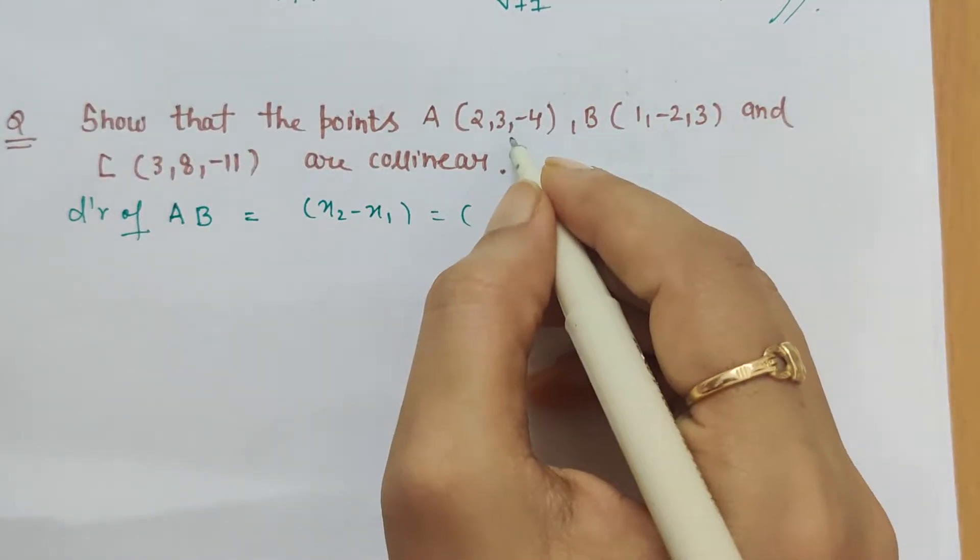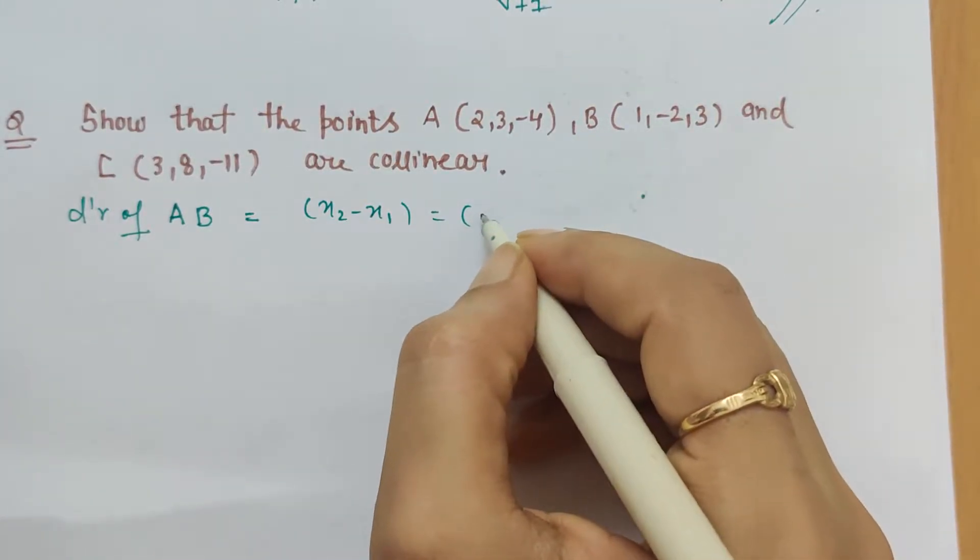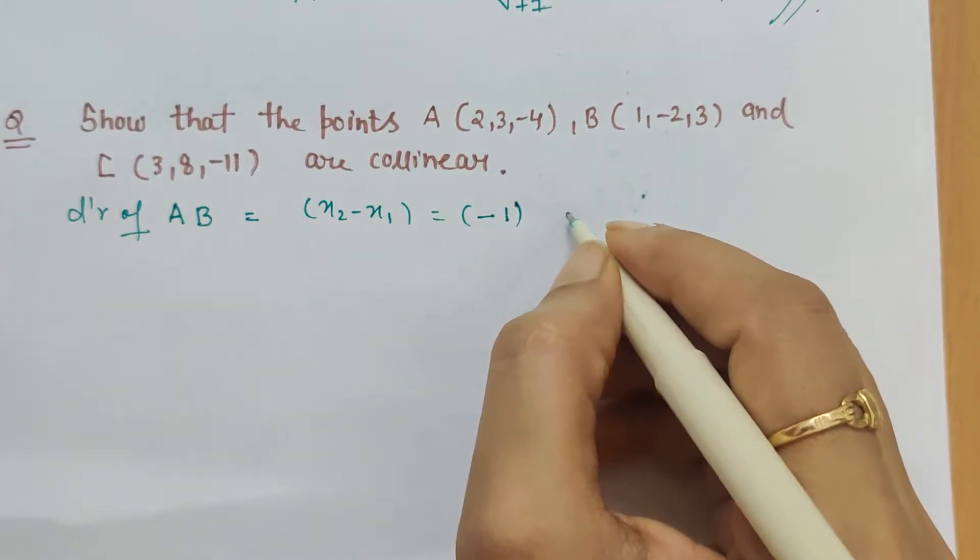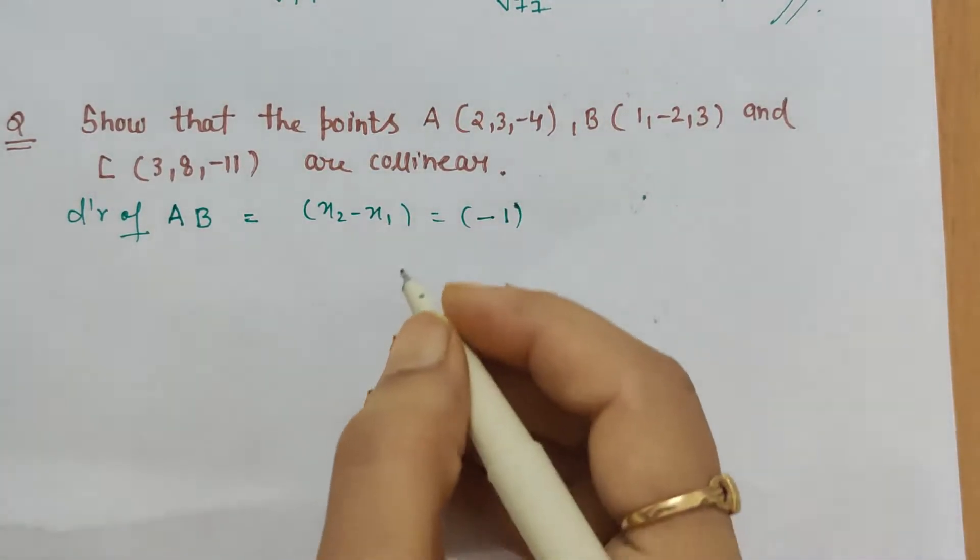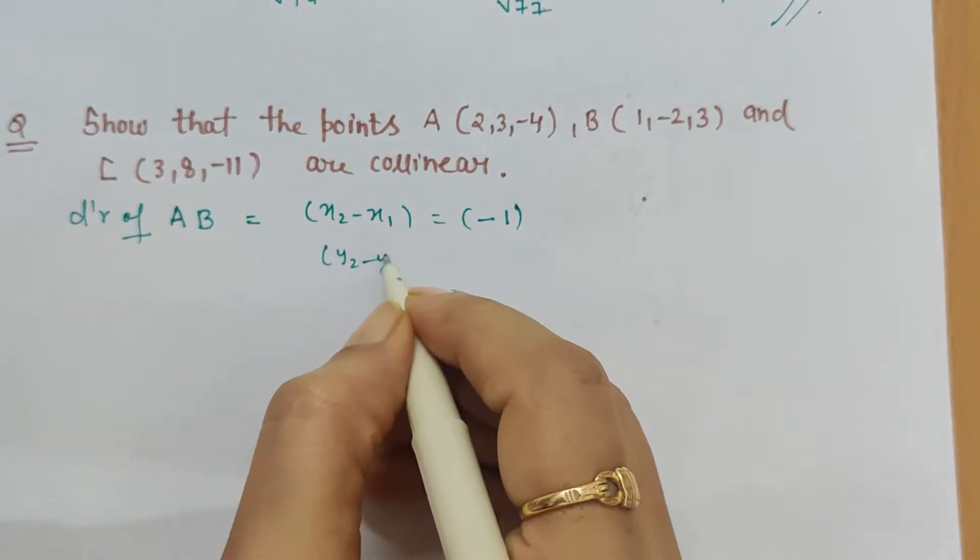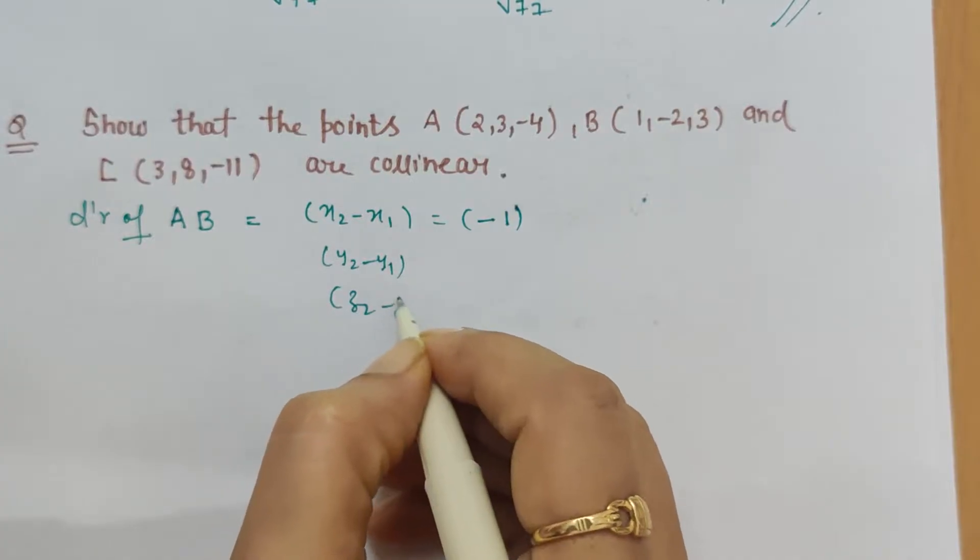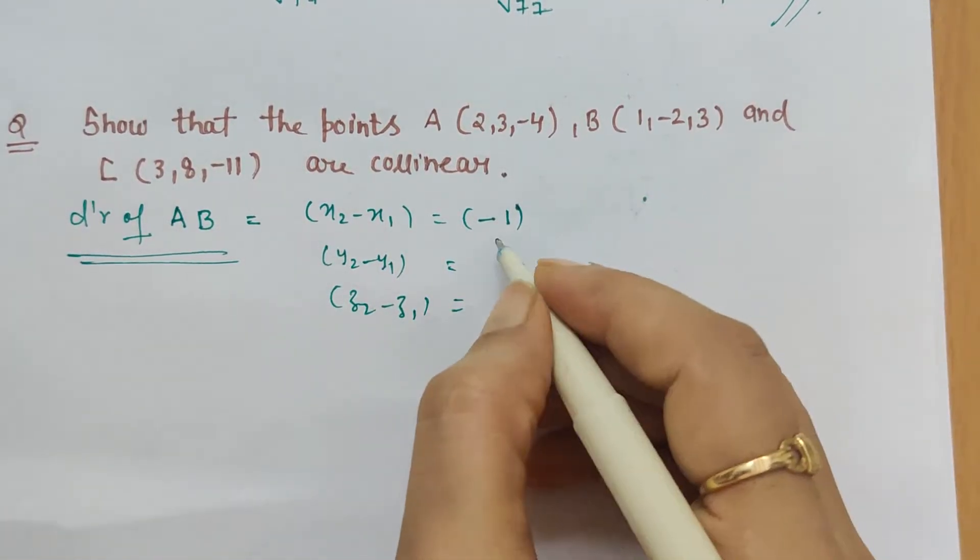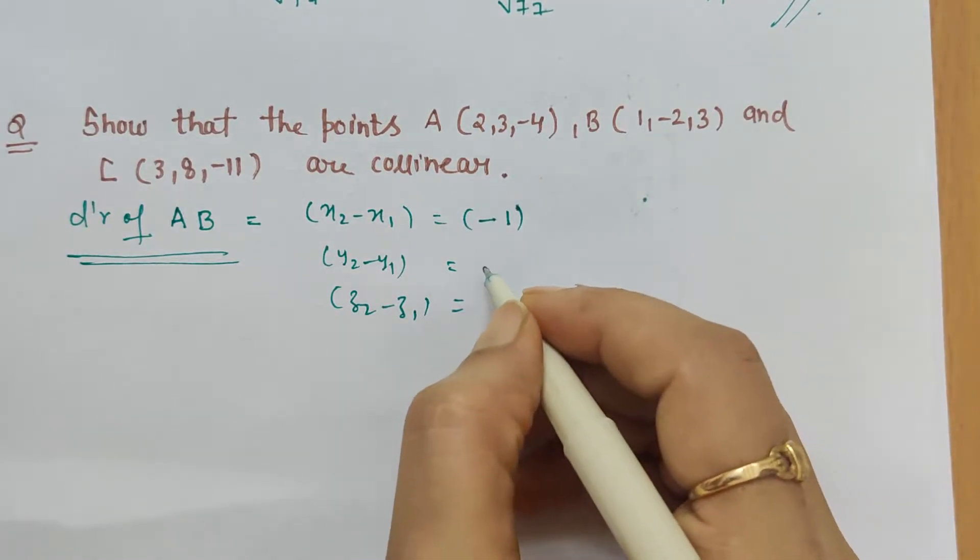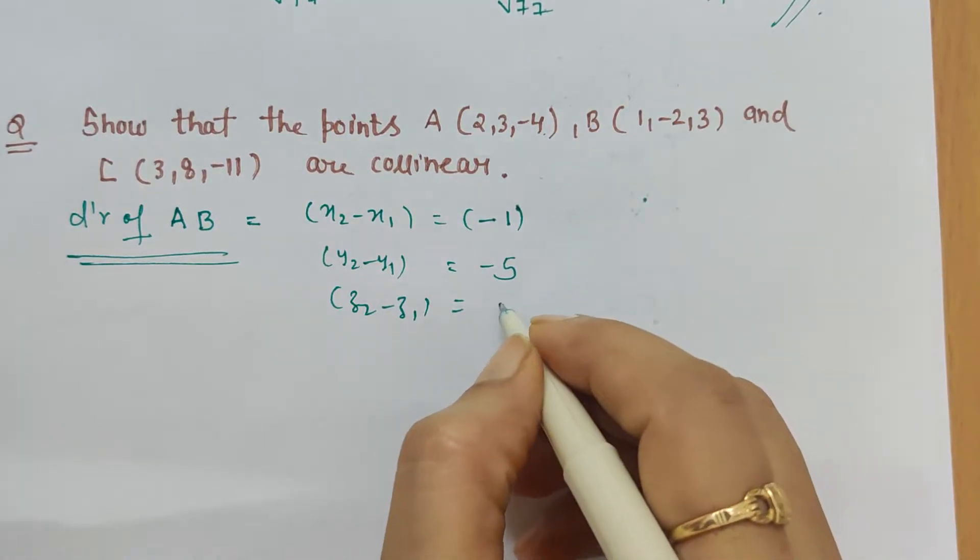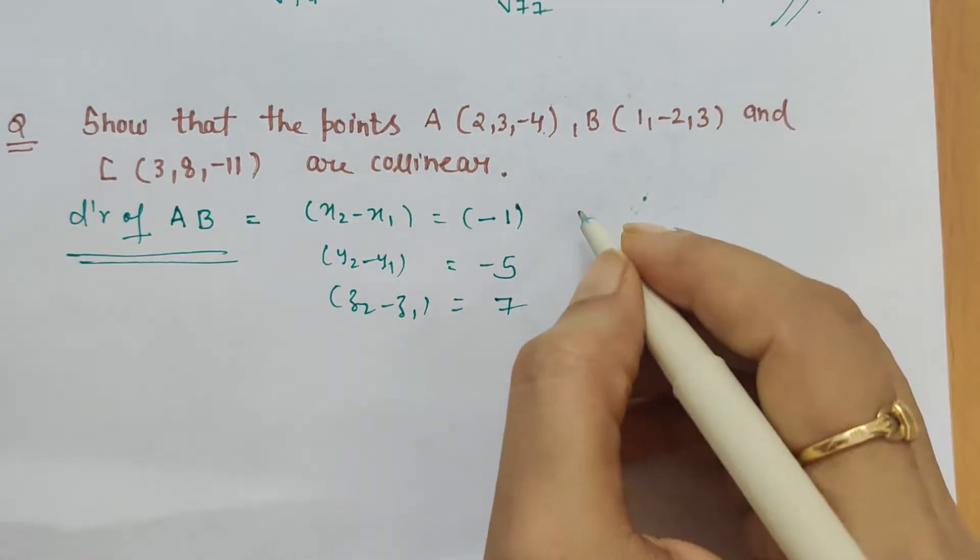...to 1 minus 2, which is minus 1. Then y₂ minus y₁, then z₂ minus z₁. So for the direction ratio of AB, what we get is minus 1. For y₂ minus y₁: minus 2 minus 3 is minus 5. For z₂ minus z₁: 3 minus minus 4 is 7.